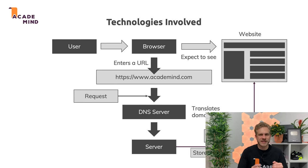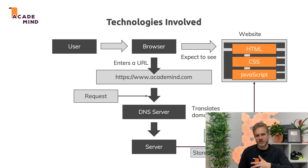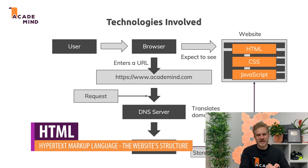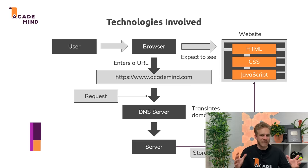What you see in the browser is the result of a combination of HTML, CSS, and JavaScript. These are the three languages or technologies involved in getting onto the screen what you see. HTML stands for Hypertext Markup Language, and it gives a website its structure. It doesn't say anything about styling — it just says what should be a heading, what should be a paragraph, what should be an input, what should be a button.